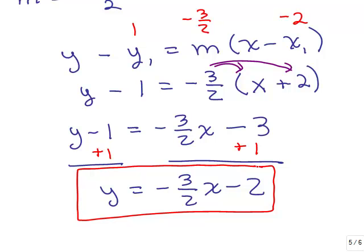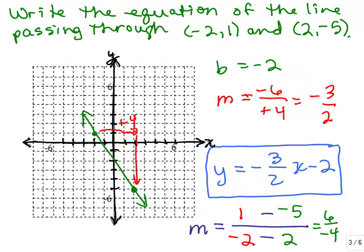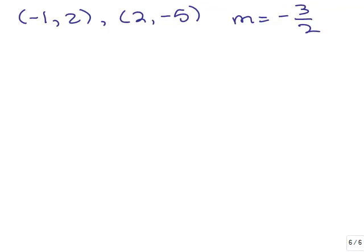Is that what we got when we did the previous method? Let's go back up and check. Here's the same problem using method 1 — we graphed it and we also got y equals negative 3 halves x minus 2. Now let's do method 2 using the other ordered pair, 2, negative 5. We were given the points negative 2, 1 and 2, negative 5, and we've already figured out more than once that the slope was negative 3 halves.